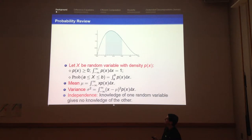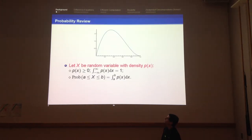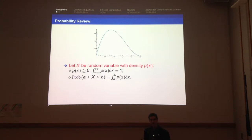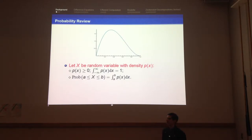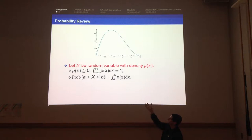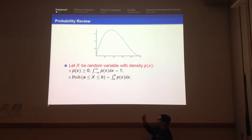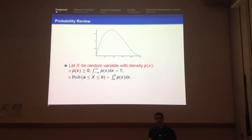So, a quick introduction and background on probability. Here is a nice function — it's non-negative and it integrates to 1. Whenever you have a non-negative function that integrates to 1, you can use it to define a probability distribution, and talk about it as a probability density. We'll say x is a random variable with density p of x if: p of x is greater than or equal to 0, the integral from minus infinity to infinity equals 1, and the probability of taking a value between a and b is just the area under the curve.